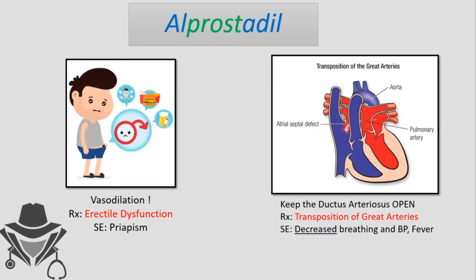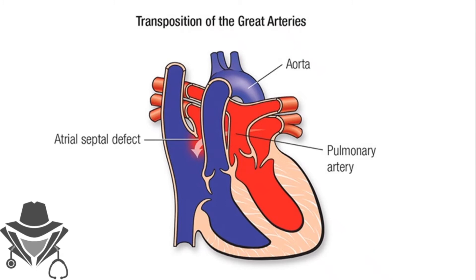The use of this drug for erectile dysfunction is now limited after the discovery of Viagra. The second application of alprostadil is the management of transposition of the great arteries — a congenital disease in which babies are born with the aorta coming from the right ventricle and the pulmonary trunk coming from the left ventricle.